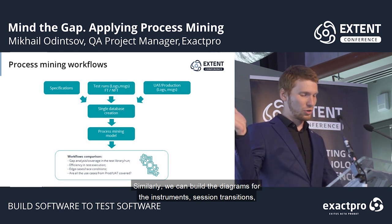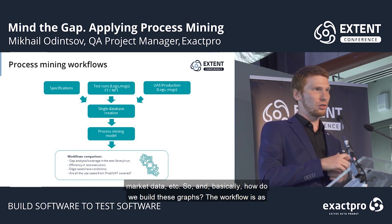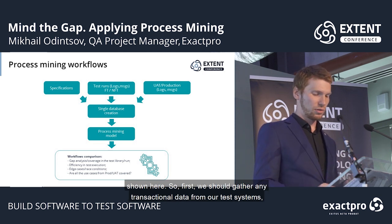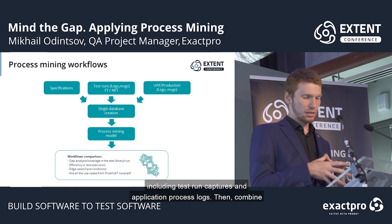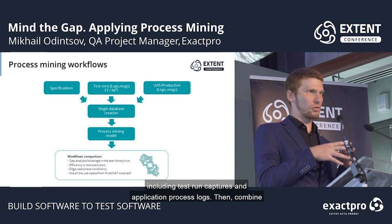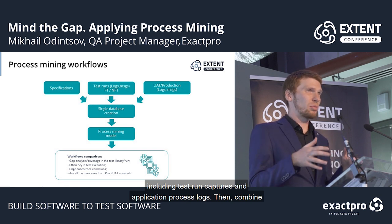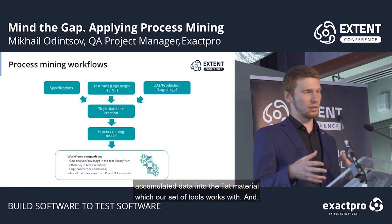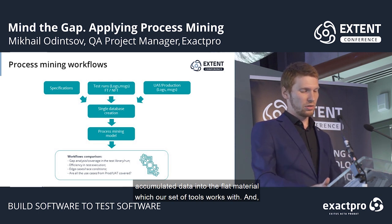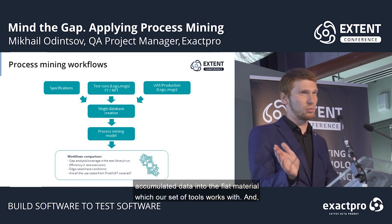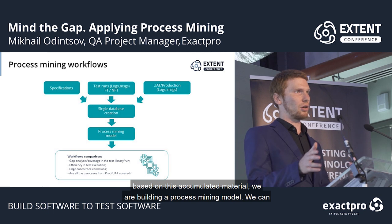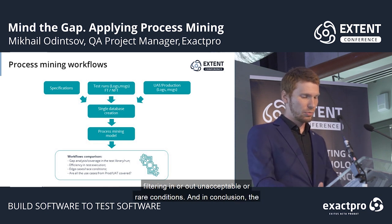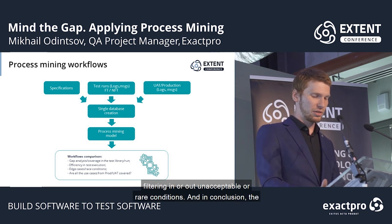How do we build this graph? The workflow is shown here. First, we gather transactional data from our test systems, including test run captures and application process logs. Then we combine this data into a single database and transform it into the flat material our set of tools works with. Based on this accumulated material, we build a process mining model. We can always use the system specification to simplify the graphs — for example, by filtering in or out unacceptable or rare conditions. The process mining model then creates graphical representations for the analysis.